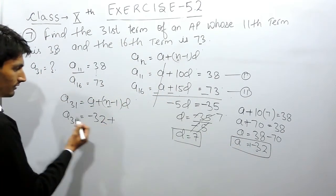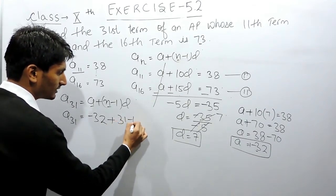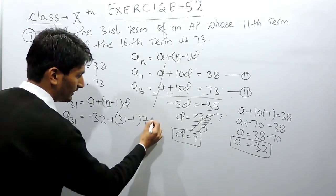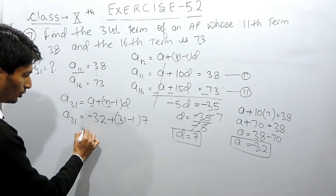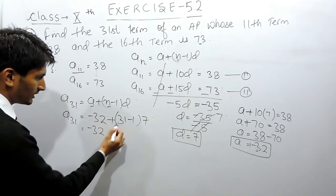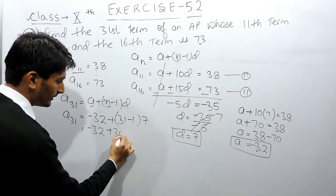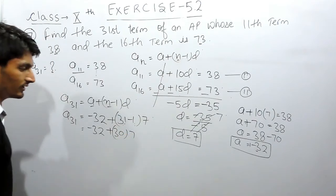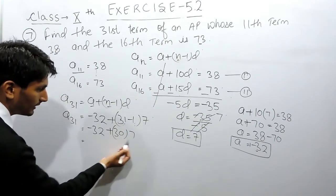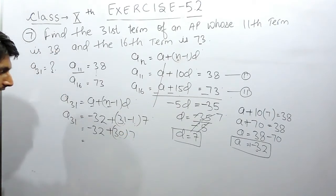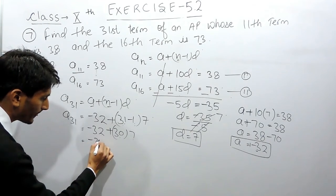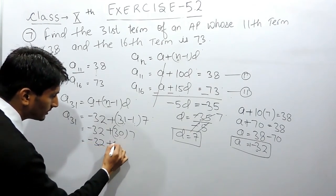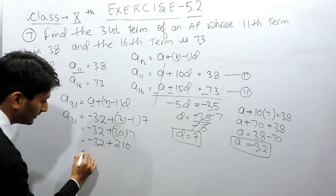And the term which we need to find is 31st, and the value of d here is 7. So solving this, this is minus 32, this is 30 into 7, plus minus is minus, 31 minus 1 is 30. Now first of all I have to open the bracket according to BODMAS, so this is 210.